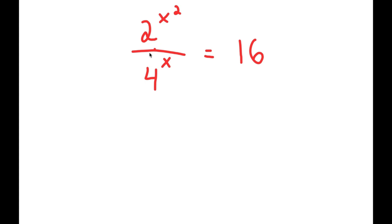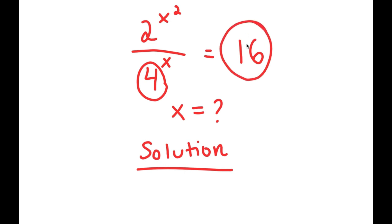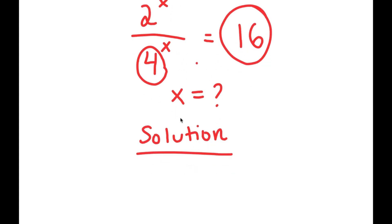In this equation, I have 2 to the power of x squared over 4 to the power of x is equal to 16. I want to find the value of x. For my solution, I'm going to start by rewriting 4 as 2 squared and 16 as 2 to the power of 4, so that all my terms are in powers of 2.